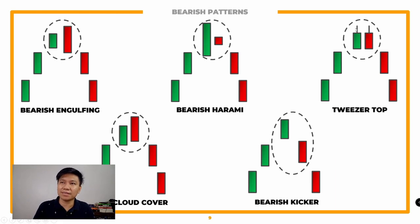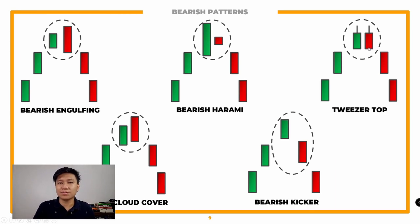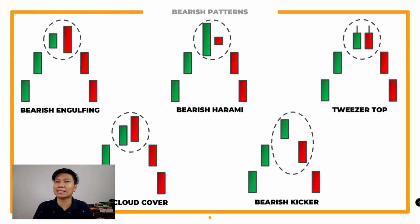For the tweezer top, ang rule dito regardless of the body — dapat yung highest point nung candlestick mo is pantay. So yung wicks niya, dapat yung price point niya halos-halos pantay lang din yan. Yung body niya regardless ng size — parang yung highs ng previous day, yung opening niya from the previous day, aabutan rin nung closing for that day. That signifies na humina na rin yung buying pressure kasi hindi na rin niya na-sustain. Madalas mong makita ito sa Bitcoin — from two consecutive days, pag nakita ka ng ganitong pattern most of the time is bumababa yung trend.